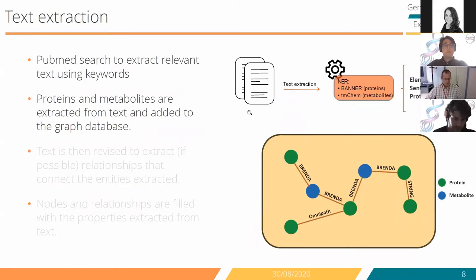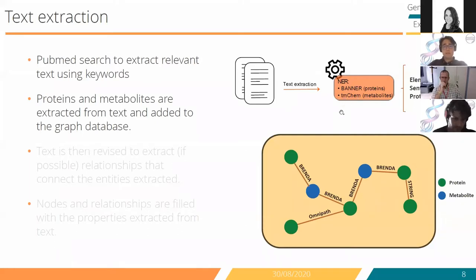To obtain reactions from research articles, PADOC extracts relevant text using user-provided keywords. Proteins and metabolites are extracted from text using named entity recognition systems, BANNER and TMChem. These systems extract the name of the protein and metabolite, and to make it comparable to information extracted from the pathway databases, it must be assigned a protein or metabolite ID before adding it to Neo4j.